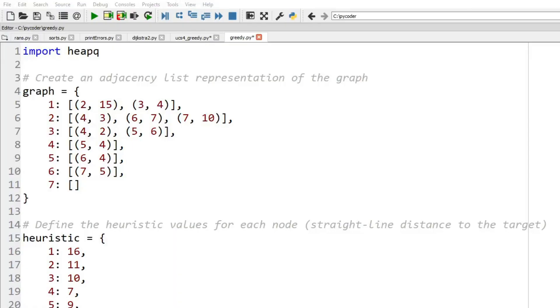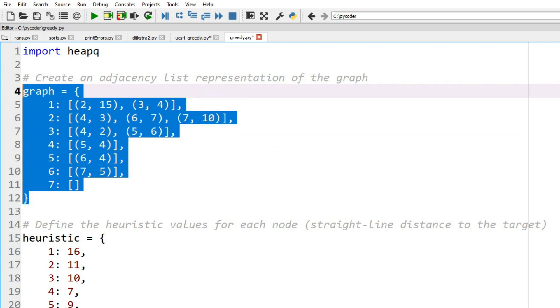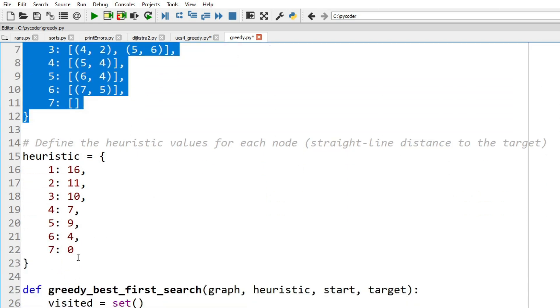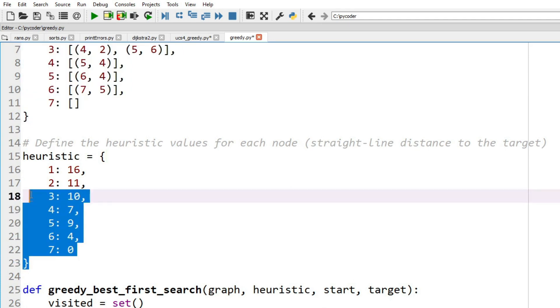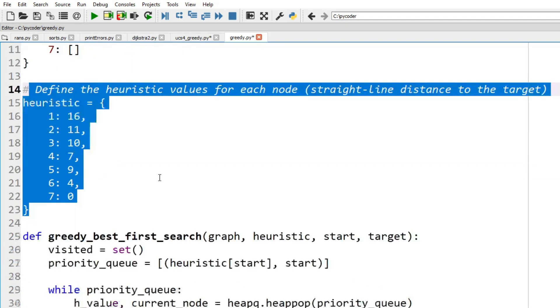Let's look at the Python code. When you look online, you will see many variations, and perhaps some look more like the uniform cost search. But here we have our graph, we have our heuristics, our straight-line distances—so those are defined.